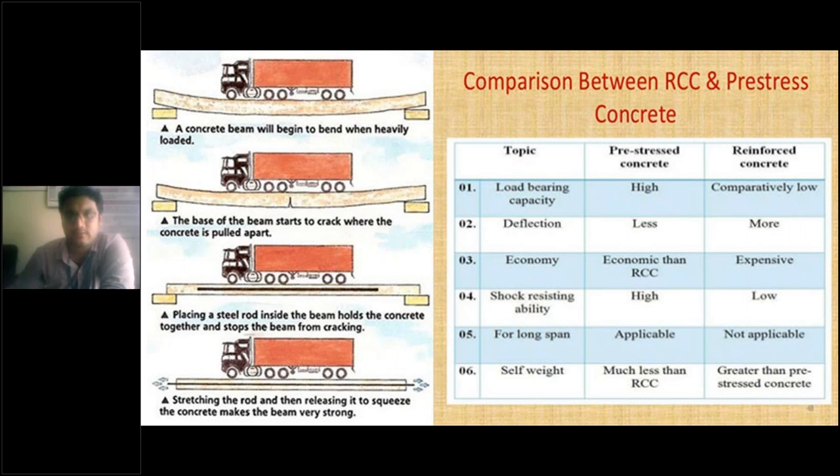In the fourth stage, you can see stretching the rod and then releasing it to squeeze the concrete, which makes the beam very strong. In the third picture we are just providing reinforcement to control cracks. But if we want to increase the strength of the beam beyond crack control, we have to stretch the rods. Squeezing the concrete with prestressing technology makes the beam very strong.